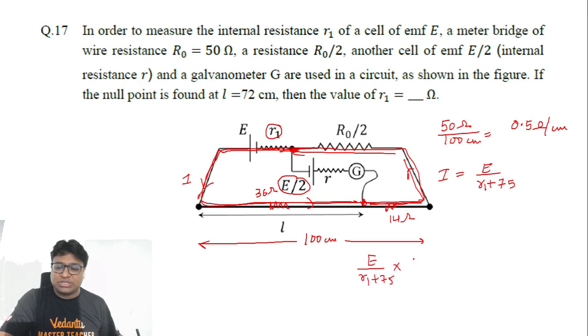So i is E divided by r1 plus 75, that is current into resistance. The resistance is 14 plus r0/2, so that's 25.